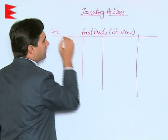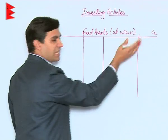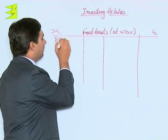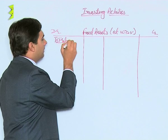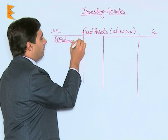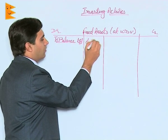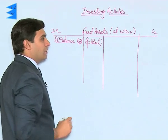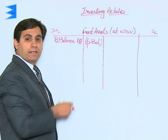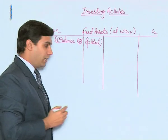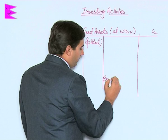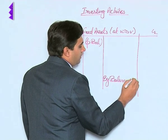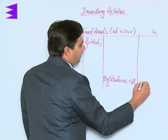We all know this is the debit side and this is the credit side, with columns for particulars and amount. The opening balance — that is, balance brought down — is written on the debit side, since assets have a debit balance. The closing balance is written on the credit side.